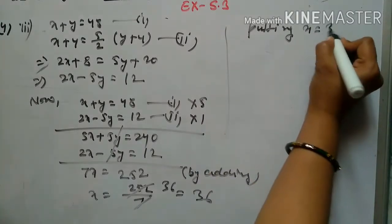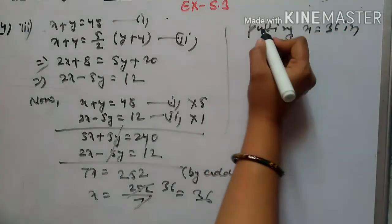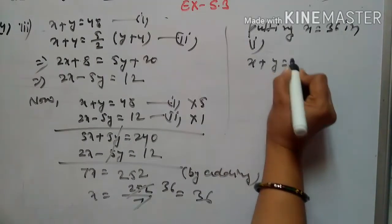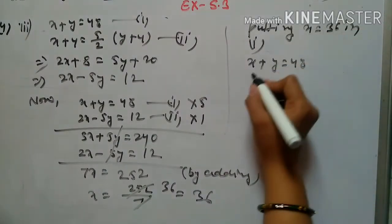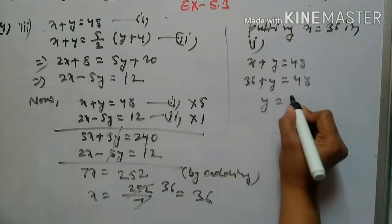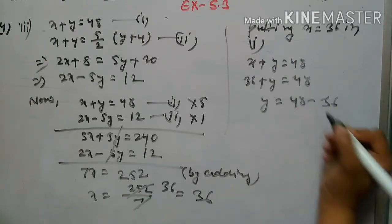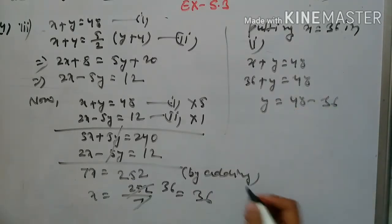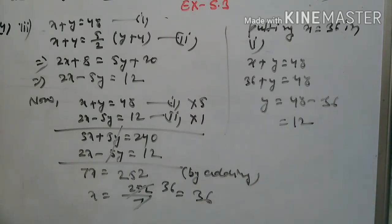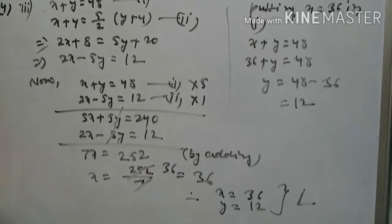After solving, we find x = 36. Now putting x = 36 into equation 1: x + y = 48, so 36 + y = 48, therefore y = 48 - 36 = 12. So x = 36 and y = 12 is the required solution. Question number 3 is complete.